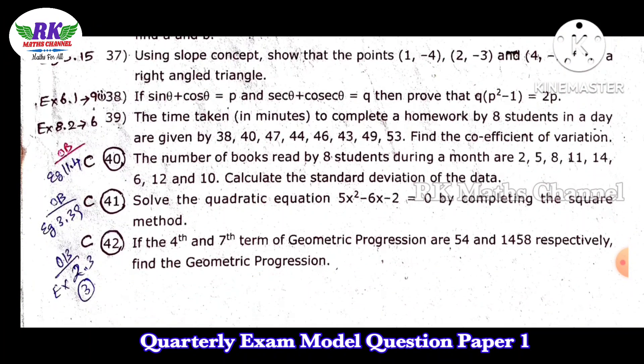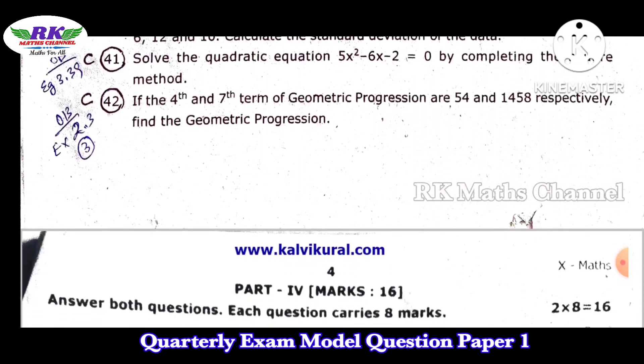Question number 29, 30, two statistics, that is now. Question number 41, quadratic equation solve, square method, completing the square method, that is important. Next question number 42, if you have 4th and 7th term of the geometric progression, that is geometric progression, that is important. So that is compulsory question. This is 5 marks.